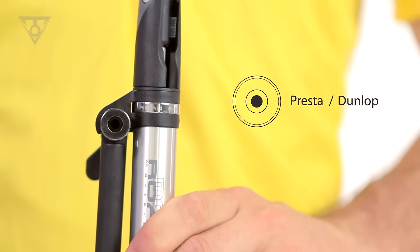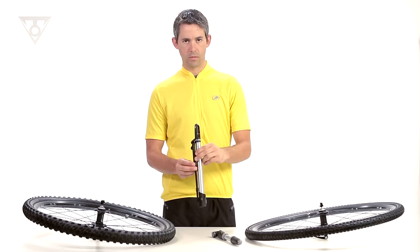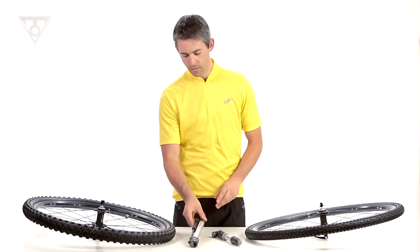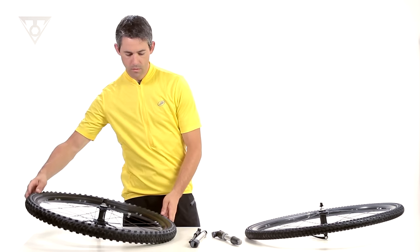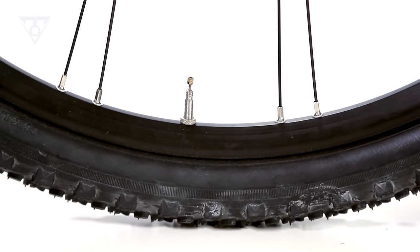If your pump head features a narrow opening, this is set up for a Presta or French valve. A Presta valve is common on high pressure road tubes and lightweight mountain bike tubes.